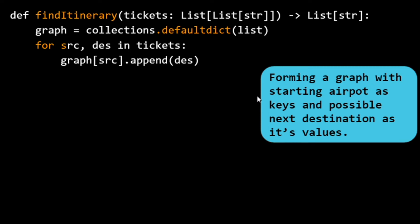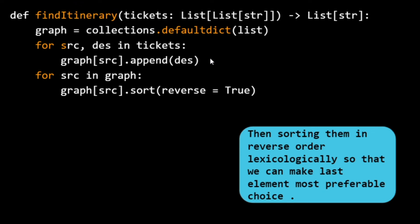The first step is to form a graph where starting airports are keys and possible next destinations are the values. I've taken the input as a list of lists of strings called tickets. After building the graph, we sort all the destinations in reverse order. We sort in reverse because when we want to remove an element from the last position of a list it is O(1), whereas removing from the front is O(n). So by sorting in reverse, the most preferable lexical choice sits at the end of the list.